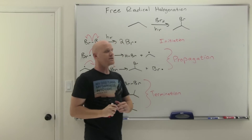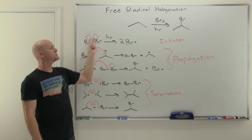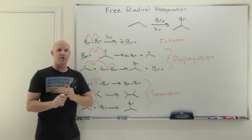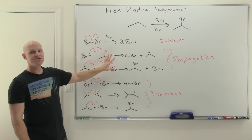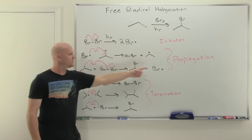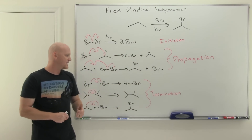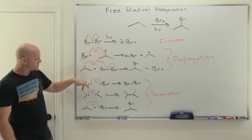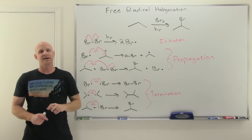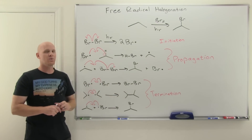To make this abundantly clear: your initiation step typically goes from no radicals to two radicals - you're getting the radical party started. Your propagation steps start with a radical and end with a radical, with no net change in radical concentration. Your termination steps take two radicals and turn them into something with no radicals, leading to a net decrease in the overall concentration of radicals in your solution.